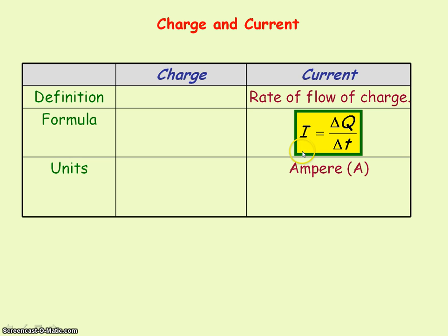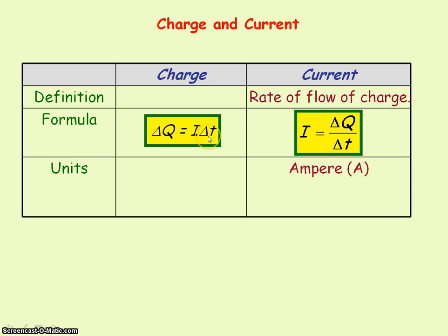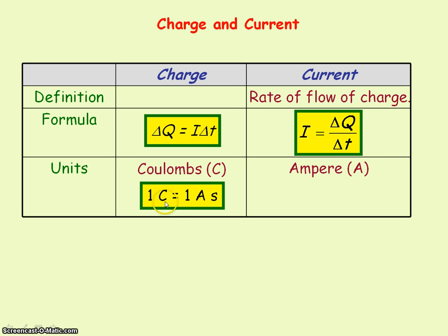From the definition of current we actually get the definition of the unit coulombs, which is the unit for charge. If we rearrange this equation, the flow of charge equals the current times the time taken. Charge is measured in coulombs, and so one coulomb equals the unit of current — amperes — times the unit of time — seconds. So one coulomb is equal to one ampere-second, meaning it is the charge flowing when you have one ampere of current for one second.